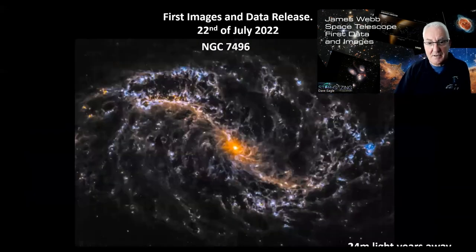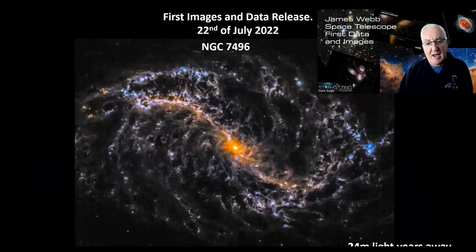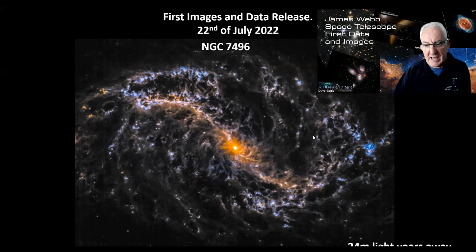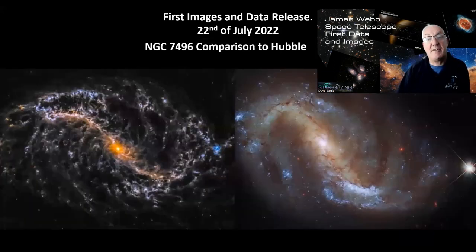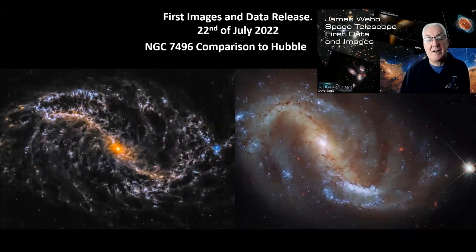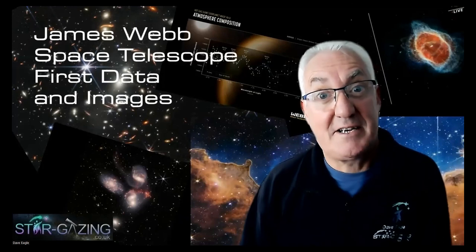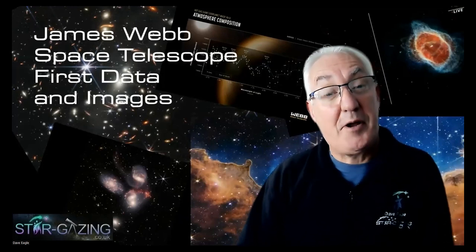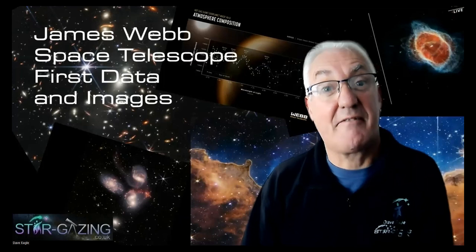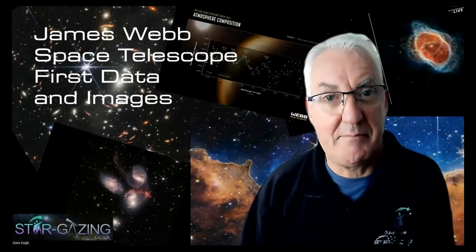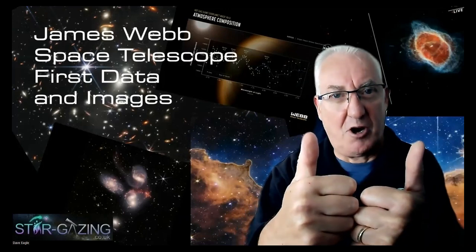The last galaxy to look at is NGC 7496, which is 24 million light years away. We're seeing all this structure within it as well, including bubble-shaped features very similar to those in Messier 74. Comparing it again to the Hubble image on the right, you can see just how much structure we're now seeing within that galaxy. I'm very excited with what's come out already - let's look forward to another 20 years of absolutely fantastic data and beautiful images. Thanks to the Webb team - keep up the great work.